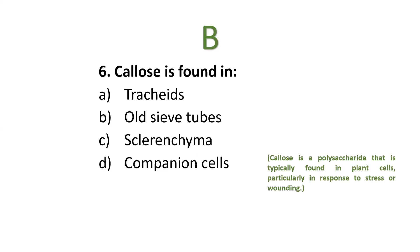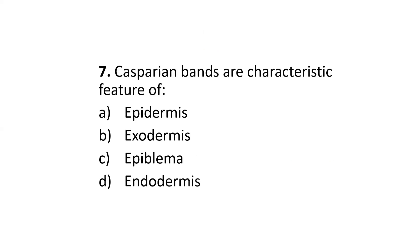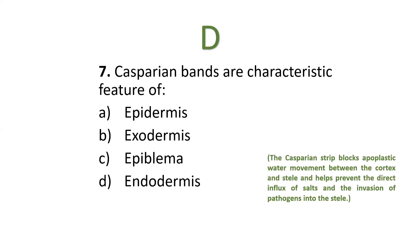Next: callus is found in — tracheids, old sieve tubes, sclerenchyma, or companion cells? The correct option is old sieve tubes. Callus is a polysaccharide typically found in plant cells, particularly in response to stress or wounding.